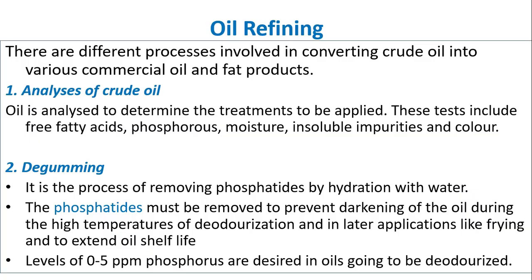Oil refining involves different processes for converting crude oil into commercial oil and fat products. First, crude oil is analyzed to determine the treatments to be applied — tests include free fatty acids, phosphorus, moisture, insoluble impurities and color. Next is degumming: the process of removing phosphatides by hydration with water, to prevent darkening during the high-temperature deodorization step and during frying, and to extend oil shelf life.